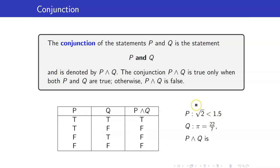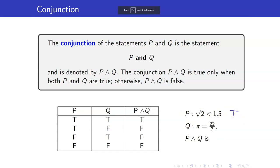Suppose that P is the statement 'square root of 2 is less than 1.5' and Q is the statement 'pi is equal to 22 over 7.' What is the truth value of P and Q? Let us get the truth values of its components. Square root of 2 is less than 1.5 — this is true; square root of 2 is approximately 1.414. What about Q? This is false — pi is just approximately equal to 22 over 7, but they are not equal. So therefore P and Q is false.